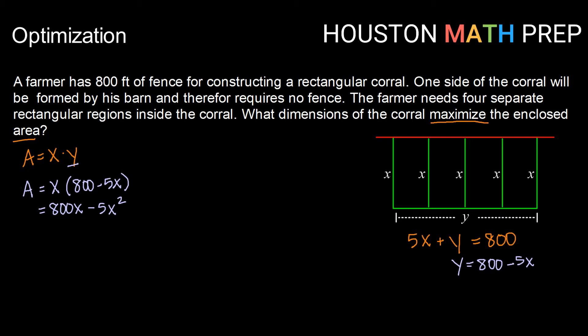area equals 800x minus 5x squared. So now we have an equation or a function here for the area of our rectangular corral that is only in terms of one variable. So that allows us to more easily take the derivative and find its place where it is maximal.